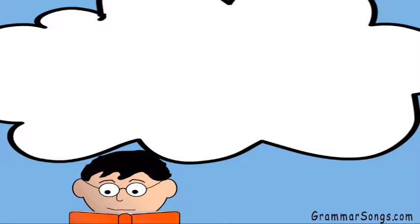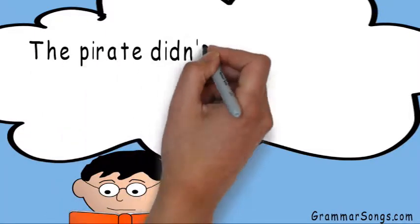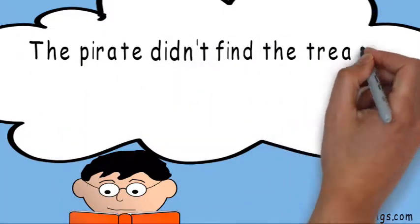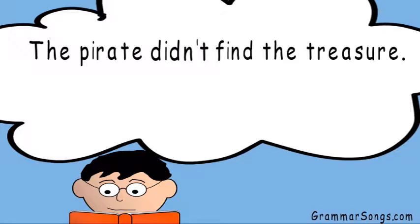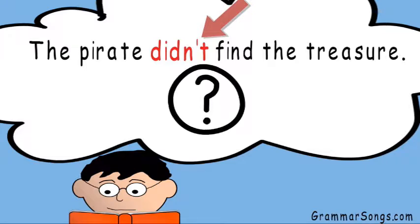Let's practice reading some contractions. The pirate didn't find the treasure. Since the word 'didn't' has an apostrophe, it is a clue that the word 'didn't' could be a contraction. So what does 'didn't' mean? What two words could be combined to make 'didn't'?